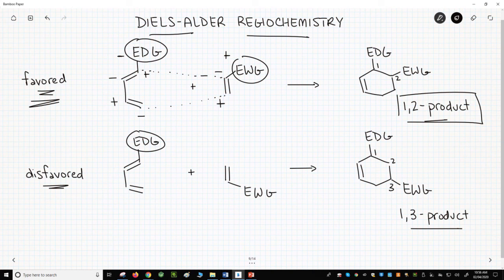If we go through the same steps on the bottom line, EDG is negative. Give our charges. EWG is positive. Give our charges. You can see the bottom pathway tries to place negative with negative. That's bad. And positive with positive. The 1,3 product is disfavored.